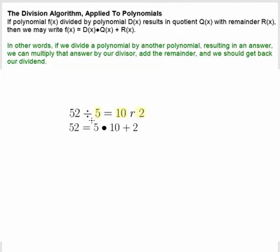According to the division algorithm, we can rewrite 52 as the divisor times the quotient plus the remainder. In fact, that's how we check our division. We multiply back our divisor times our quotient and add back the remainder. Here, 50 plus 2 equals 52, so we know we have the right answer.